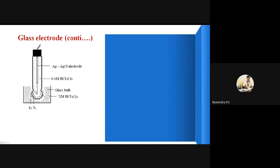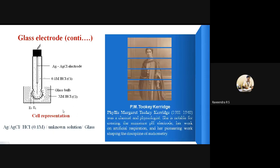Inside the glass membrane, a potential develops denoted as E1; outside the glass membrane, a potential E2 also develops. E2 is the potential developed outside the membrane and E1 is developed inside. The complete cell representation is: Ag | AgCl | HCl (0.1 M) | unknown solution | glass. This miniature form of the pH electrode was first developed by the scientist PM2K Carids.